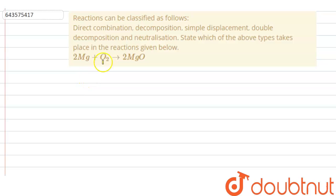Hello everyone, let us solve this question. The question says that reactions can be classified as follows: Direct combination, decomposition, simple displacement, double decomposition and neutralization. State which of the above types takes place in the reactions given below.